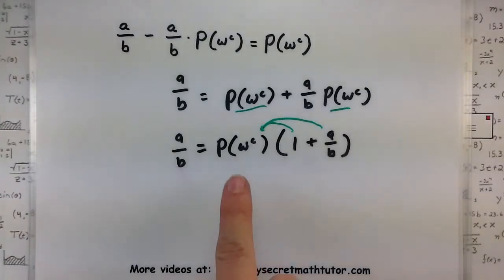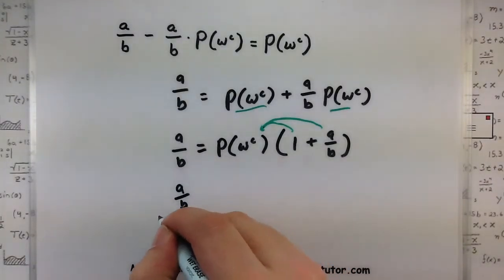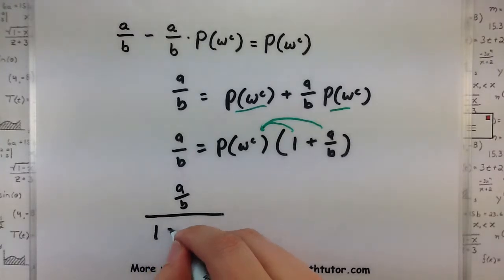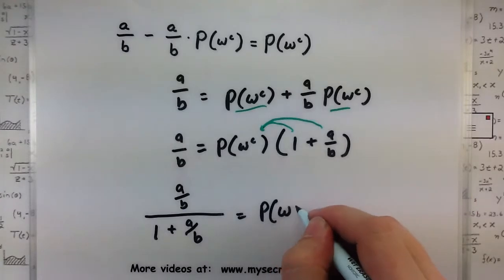So A/B equals, grabbing a piece from both of them, probability of not winning times one plus A over B. So carefully look at that step. Notice how we're really just taking this piece that was common to both and pulling it out front.